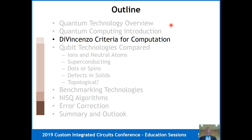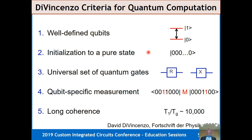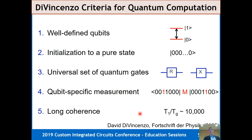Let's look at the DiVincenzo criteria for quantum computing. Dave DiVincenzo was at IBM and came up with five criteria for computing and two for communication. First: well-defined qubits. For binary quantum computing, you need two states that are easily distinguishable — we call them 1 and 0. Second, we initialize them to a pure state. Third, we have a universal set of quantum gates. Fourth, we measure specific qubits without disturbing the rest. Fifth, we need long coherence time — basically how long we can preserve the quantum information.